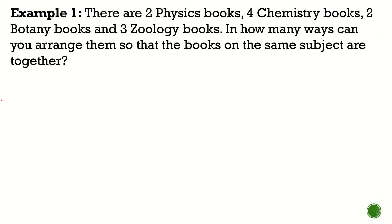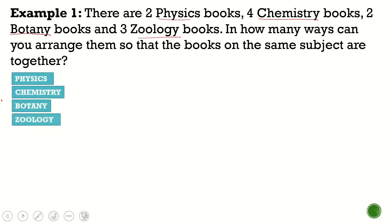Let's go to the examples. We have two physics books, four chemistry books, two botany books, and three zoology books. In how many ways can you arrange them so that the books on the same subject are together? In this kind of problem, we need to consider two things. Number one, we have four different subjects — physics, chemistry, botany, and zoology — and those books should be together: physics books together, chemistry books together, botany books together, and zoology books together.